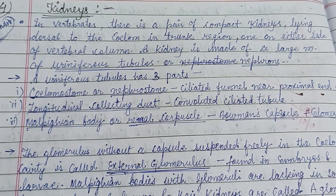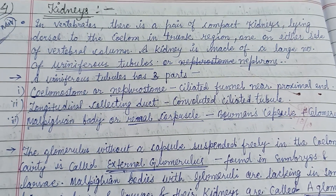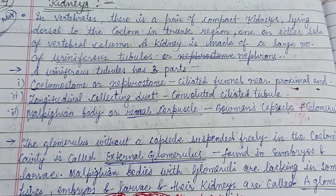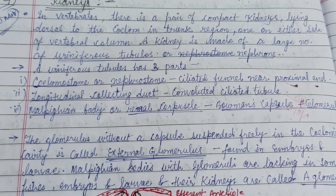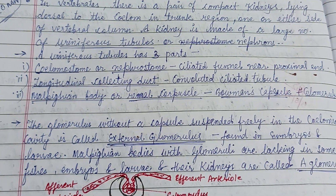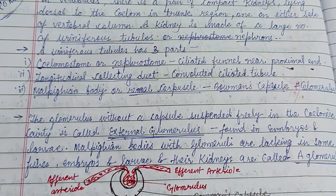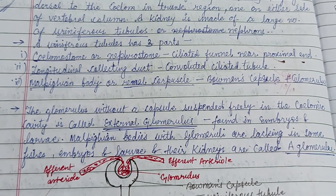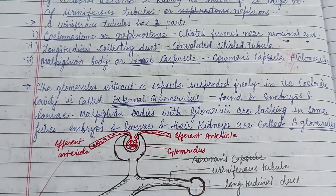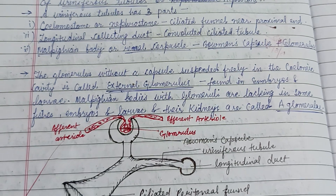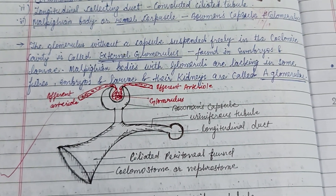Hello friends, welcome to my channel. This video is about the vertebrate kidney — the comparative study of vertebrate kidneys. Kidneys in vertebrates are a pair of compact organs lying dorsal to the coelom in the trunk region, one on either side of the vertebral column. A kidney is made up of a large number of uriniferous tubules or nephrons. Uriniferous tubules have three parts: nephrostomes, a long collecting duct, and the Malpighian body, that is the renal corpuscle.